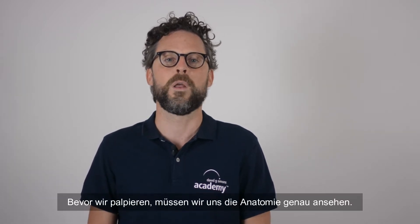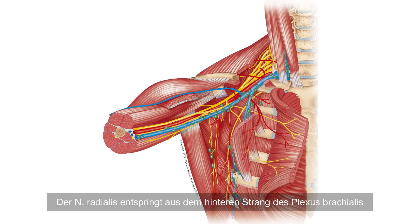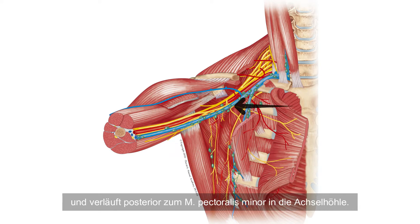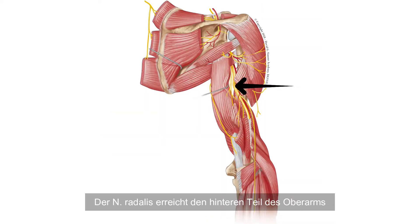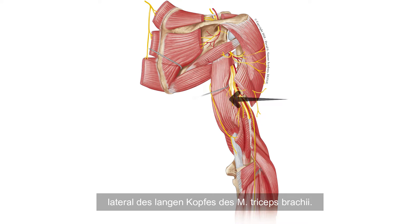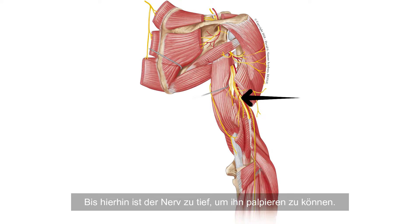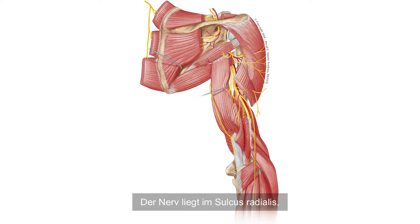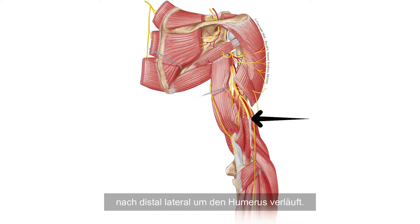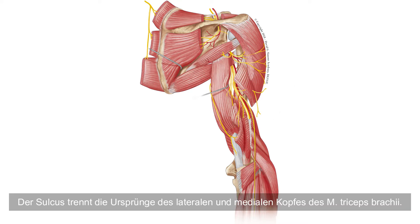Before palpation we have to have a close look at the anatomy. The radial nerve arises from the posterior cord of the brachial plexus and passes posteriorly to the pectoralis minor muscle into the armpit. It reaches the posterior part of the upper arm laterally on the long head of the triceps brachii muscle. Up to here the nerve is too deep to be palpated. The nerve lies within the radial sulcus, also known as the radial groove, which runs in a spiral course from proximal medial to distal lateral around the humerus. The sulcus separates the origins of the lateral and the medial head of the triceps brachii muscle.